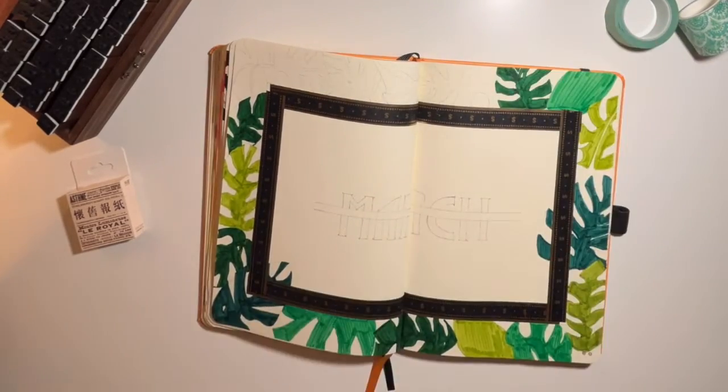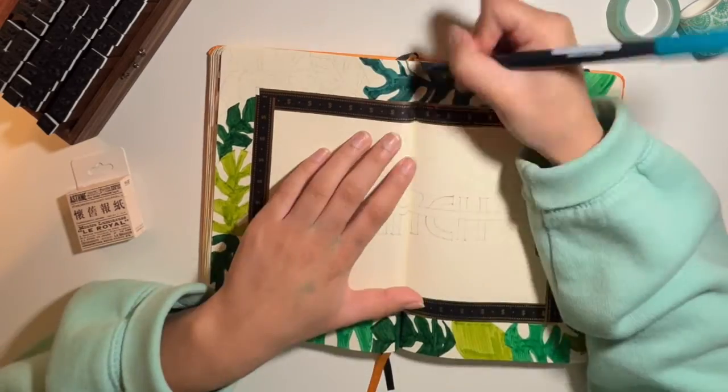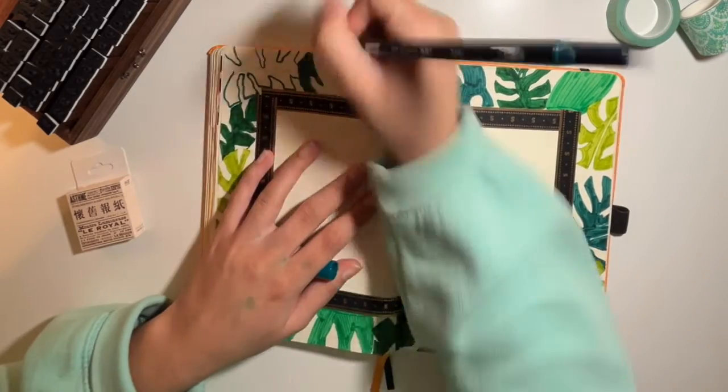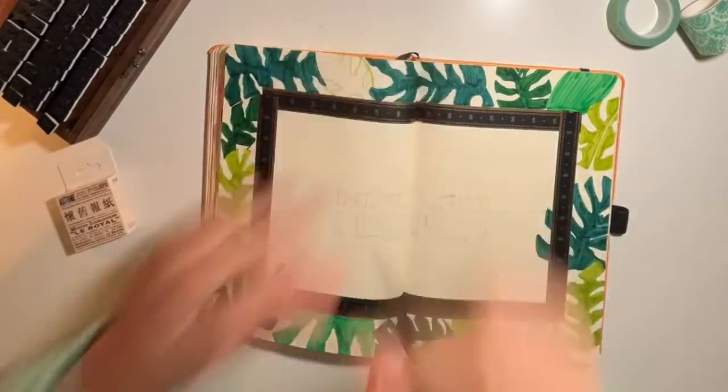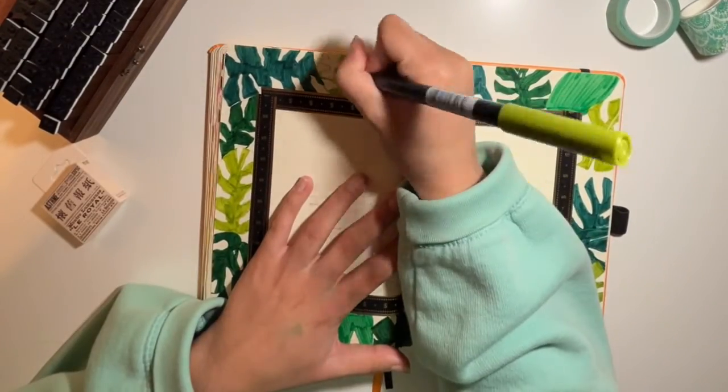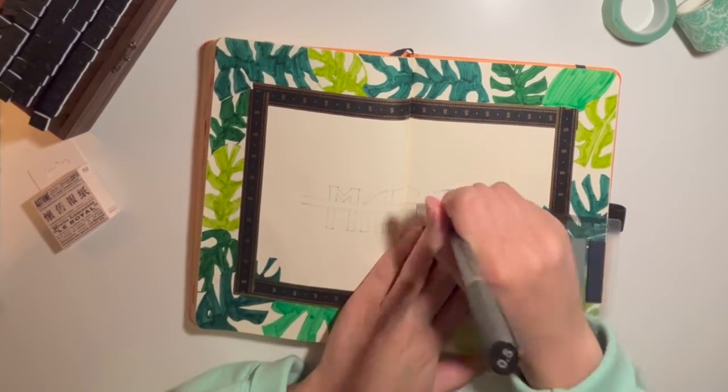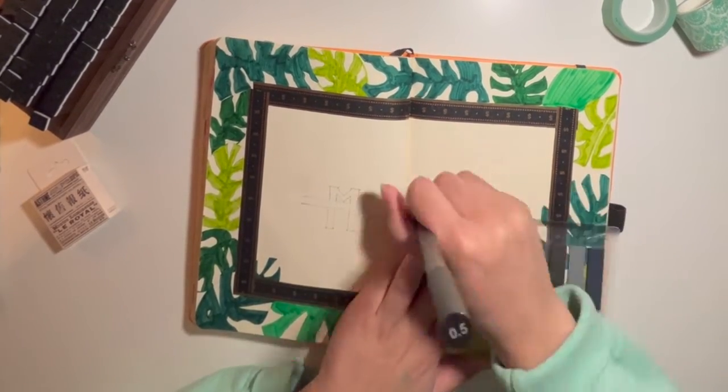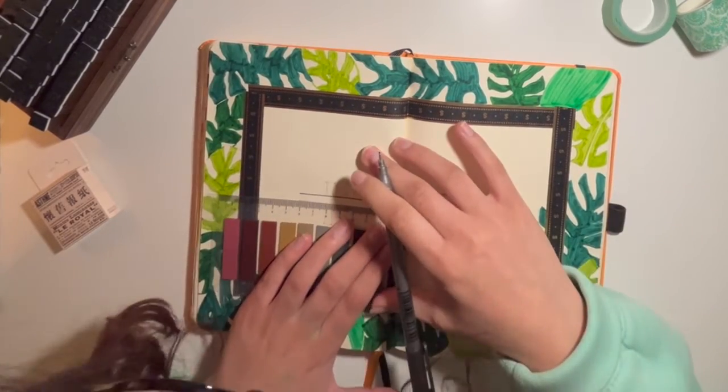So now I'm just going in to do the font, and this is just the March title. And as you'll see, this sort of line in the middle of the letters is a theme throughout this month's spreads.